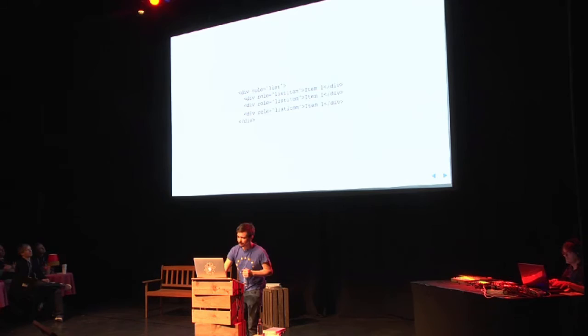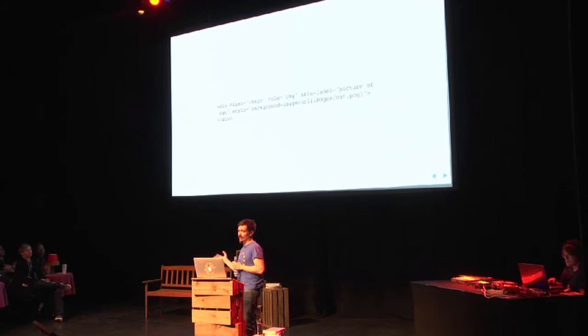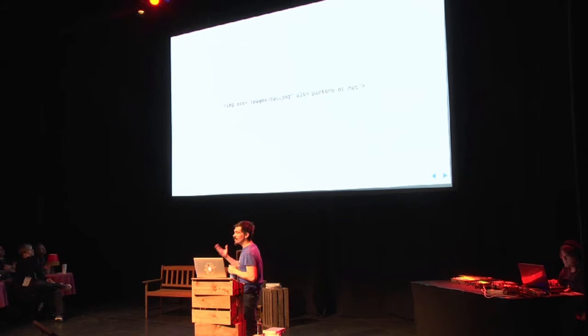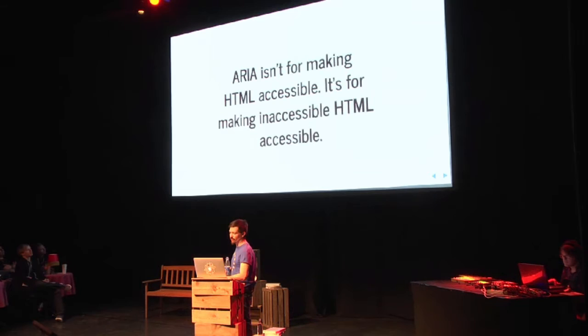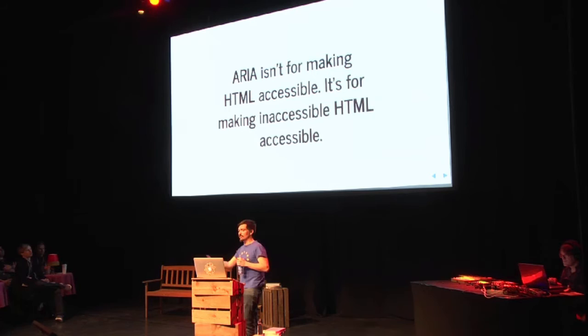This is a list you could just make out of list items. And I saw on a project the other day someone trying to reinvent the image tag using a div: a div with class 'image,' an aria-label of 'picture of cat,' and an inline background-image style — because you can't use an alt attribute on a div. What you should really be doing is just using an img tag. Why were they doing it? Because they could. Should they? Fuck no. ARIA isn't for making HTML accessible — it's for making inaccessible HTML accessible. It's for patching shit HTML that had already been done badly.